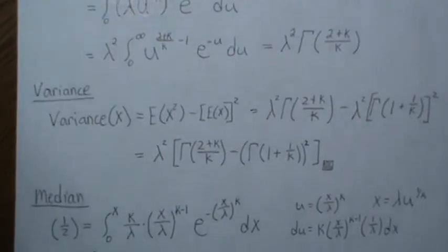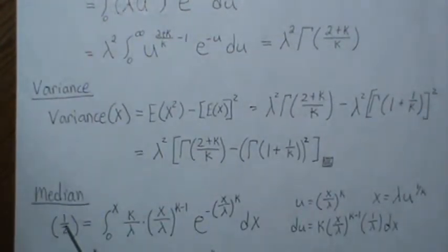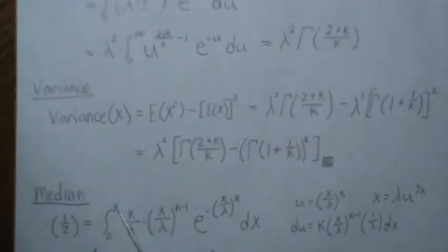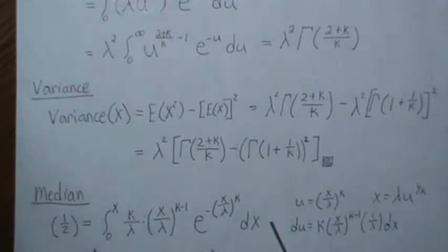Now, for the median, we want to find the x that makes this integral 1 half. So we set 1 half equal to this, and it goes from 0 to some number. These x's here are the dummy variables, and this is the value that we're trying to solve for. Then we let u equal the standard x over lambda raised to the k.